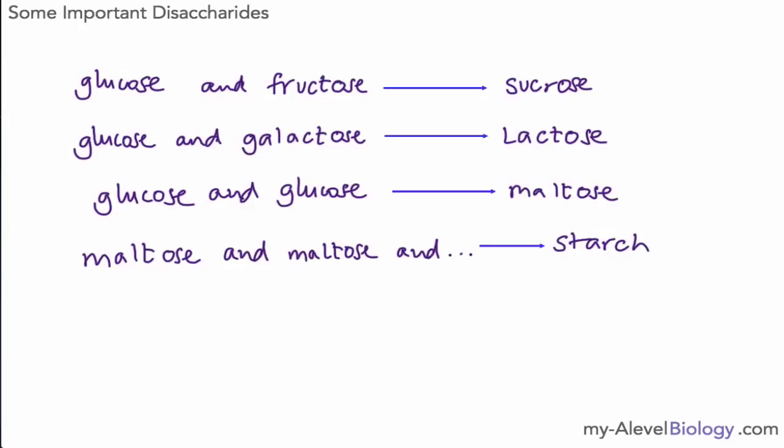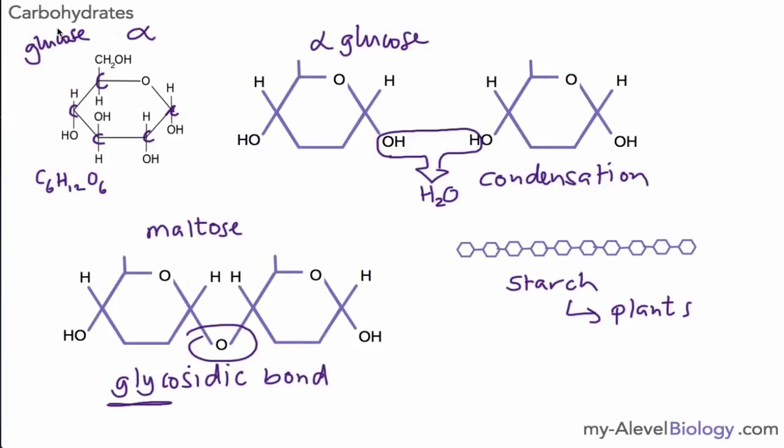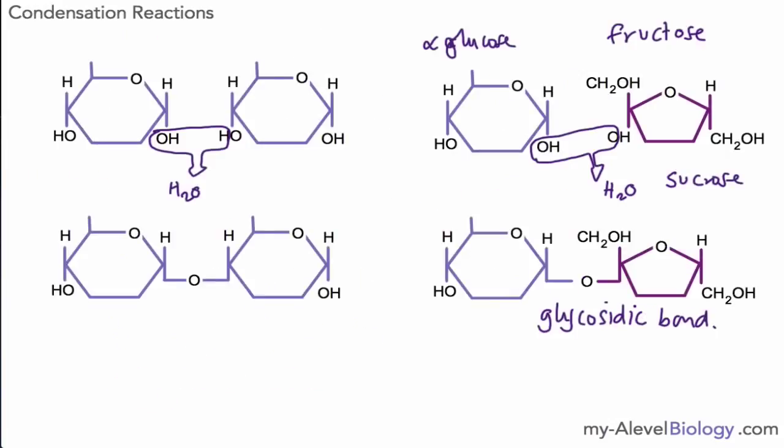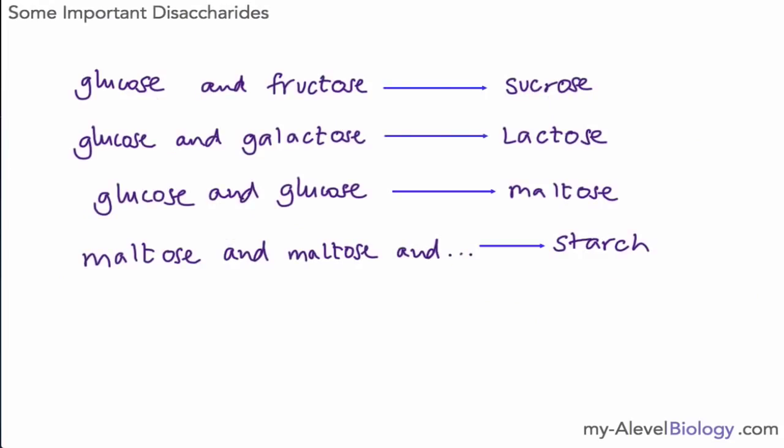So there we have it. This is an outline of our carbohydrates and how we can bond monosaccharides together to make disaccharides and so on. These slides are probably quite important for you to make a note of, and you should be able to do the kinds of things that I was doing as we were going through the video here. Okay, but that's me done for today. Thank you for watching and I'll see you soon.